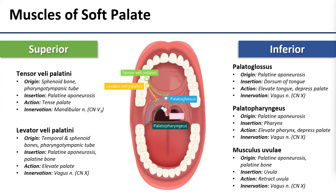Here in green we've got the tensor veli palatini muscle. You can see that it originates superiorly on the sphenoid bone and the pharyngotympanic tube, then travels inferiorly and wraps medially around that pterygoid hamulus and into the palate. The right side joins up with the left side in the midline, and that's what creates that sling — the palatine aponeurosis that the other muscles attach to.